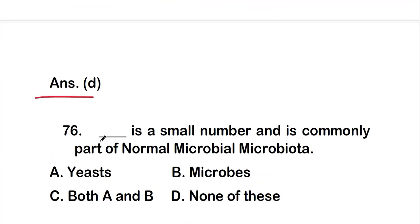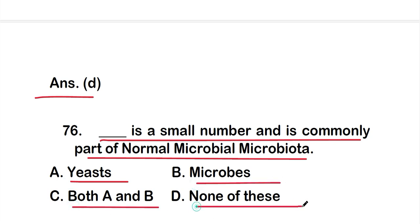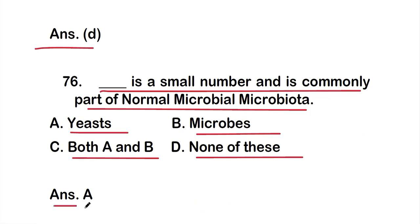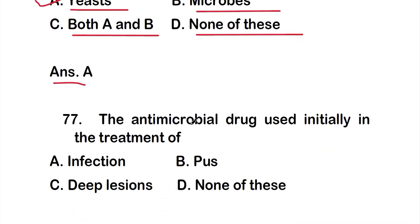Question 76: Dash is present in small numbers and is commonly part of the normal microbial microbiota — options: A: yeast, B: microbes, C: both A and B, D: none of these. The right answer is option A: yeast. Yeast is present in small numbers and is commonly part of the normal microbial microbiota.